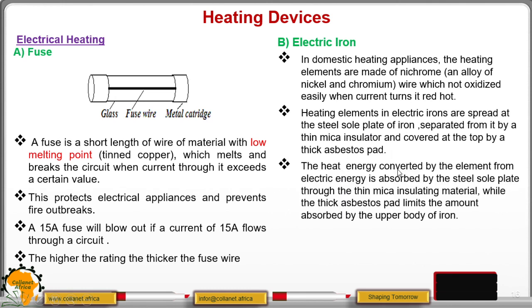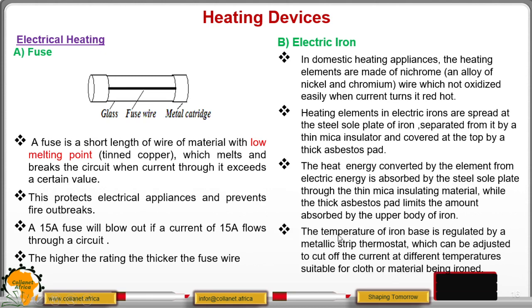Now, the heat energy converted by the element from the electrical energy is absorbed by the steel sole plate through the thin mica insulating material. While the thick asbestos part limits the amount absorbed by the upper part of the iron box. And therefore, you can use the iron box without being heated.